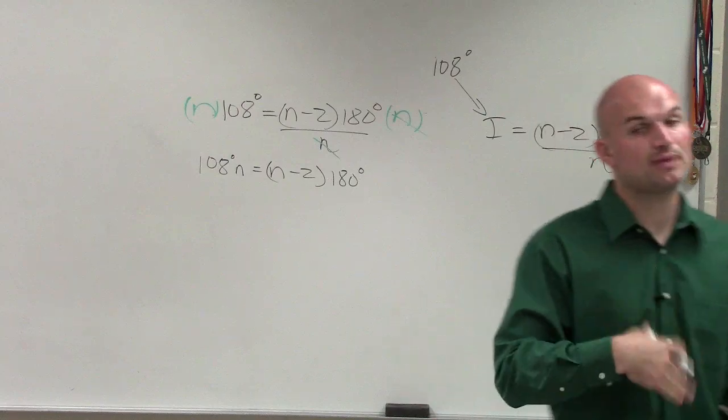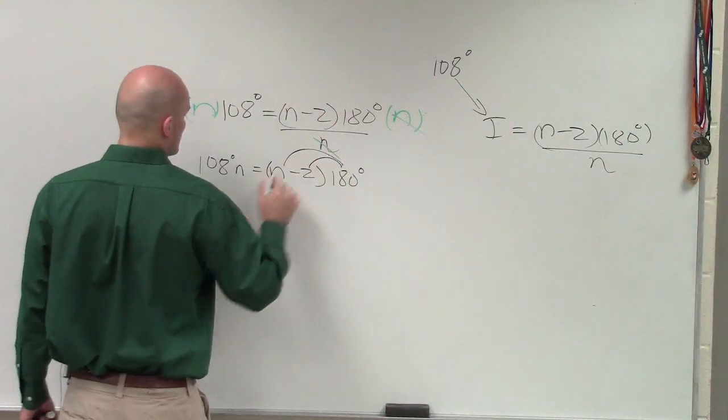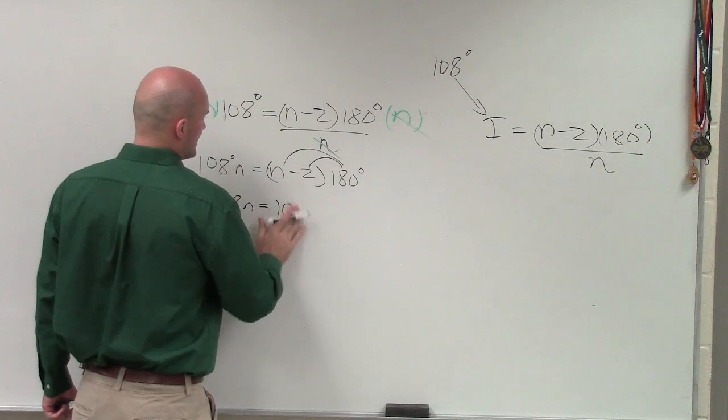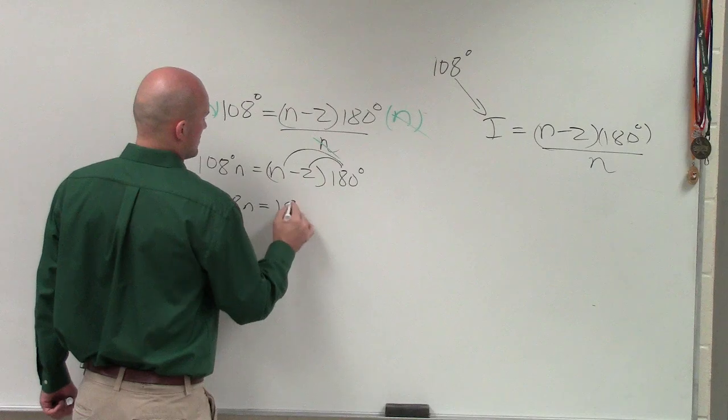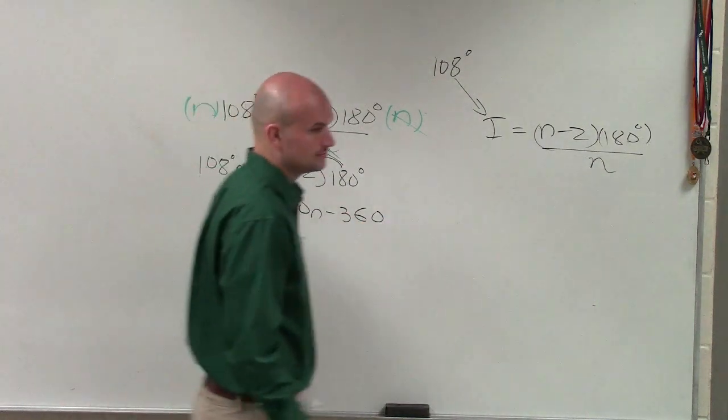Now, what I can do is I can apply the distributive property. And therefore, I have 108n equals 180n minus 360. OK?